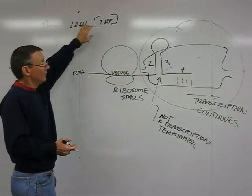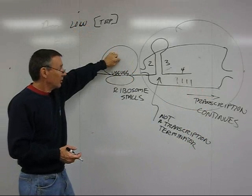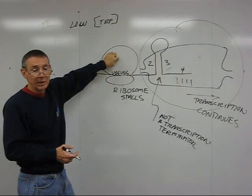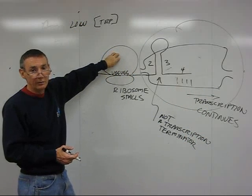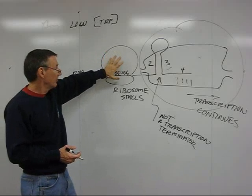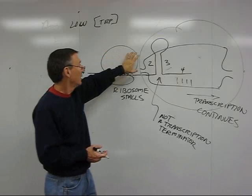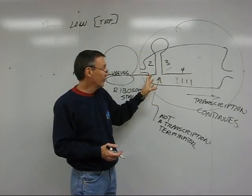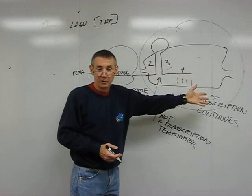The point here is the concentration of tryptophan controls how fast the ribosome can get through region 1 of the leader. If there's low tryptophan and the ribosome stalls here, that allows 2 and 3 to pair. That's not a terminator. It allows transcription to continue.